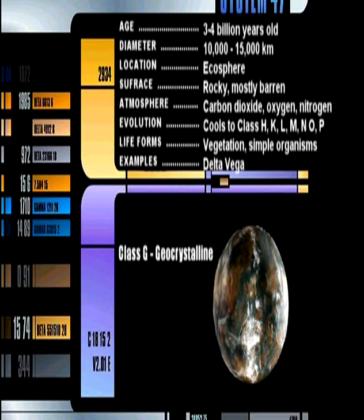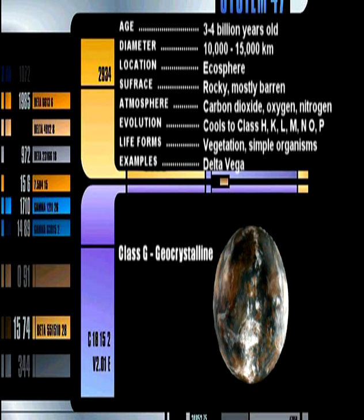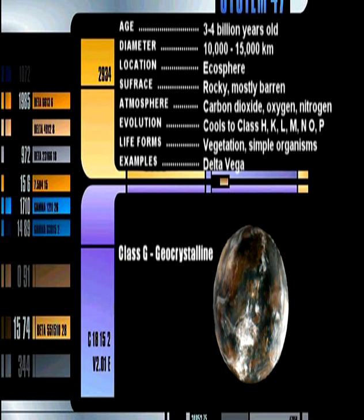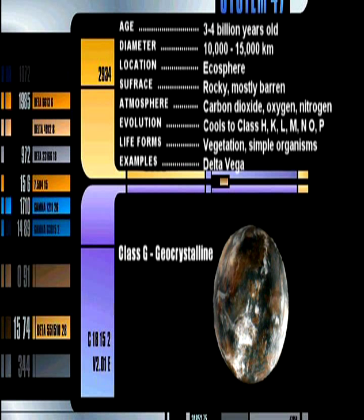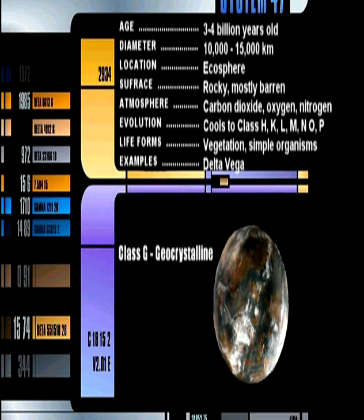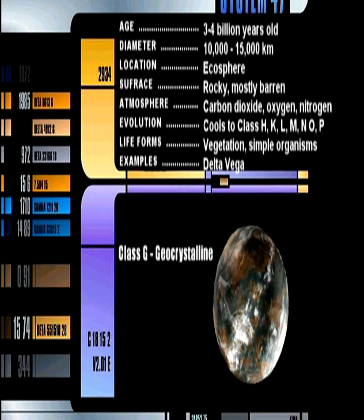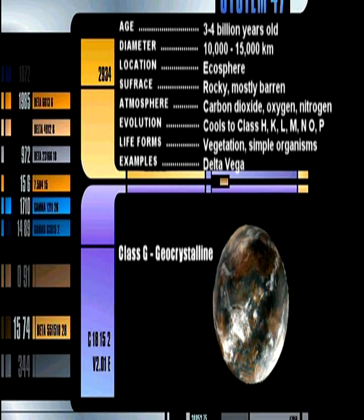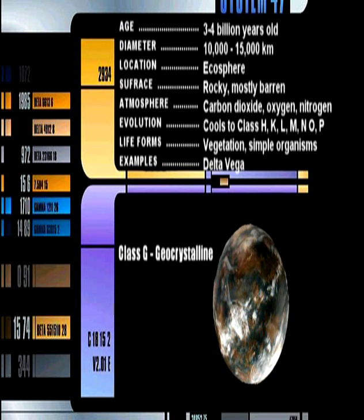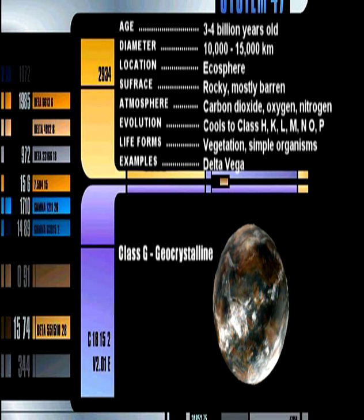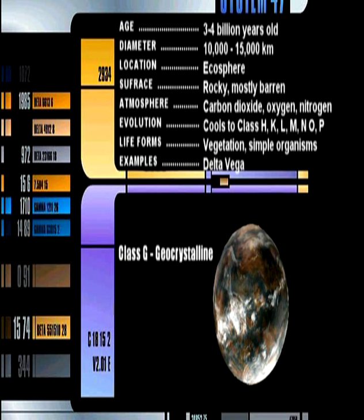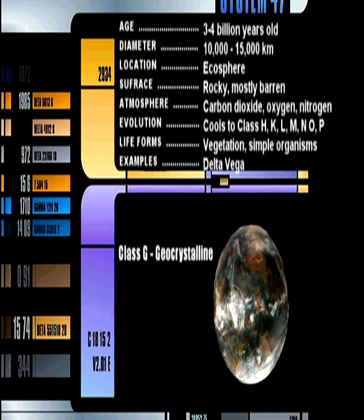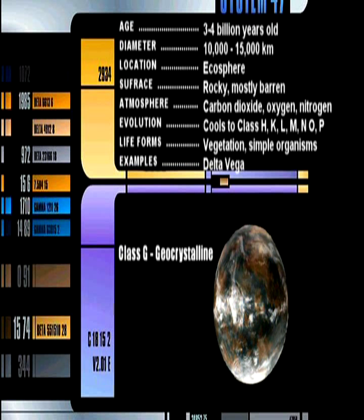Class G Geo-crystalline. Once the core of a Class F planet is sufficiently cool, volcanic activity lessens and the planet is considered Class G. Oxygen and nitrogen are present in some levels in the atmosphere, giving rise to increasingly complex organisms such as primitive vegetation like algae, and animals similar to sponges and jellyfish. A Class G planet is often a turning point, as the planet can evolve into a large selection of other different forms ranging from Class H to Class P, depending on various orbital and solar activity.